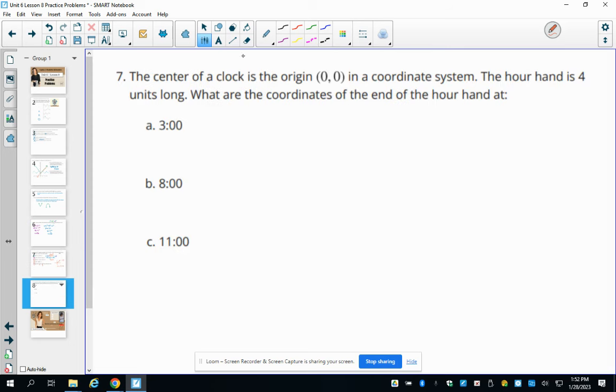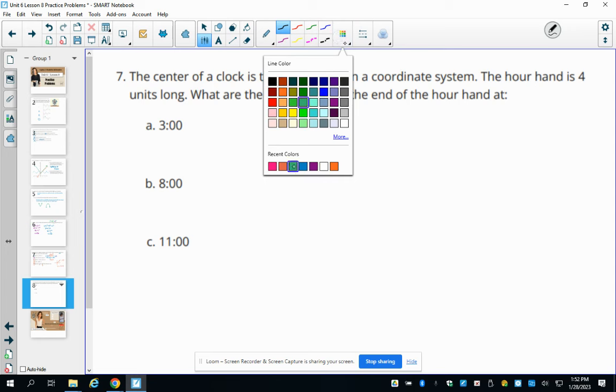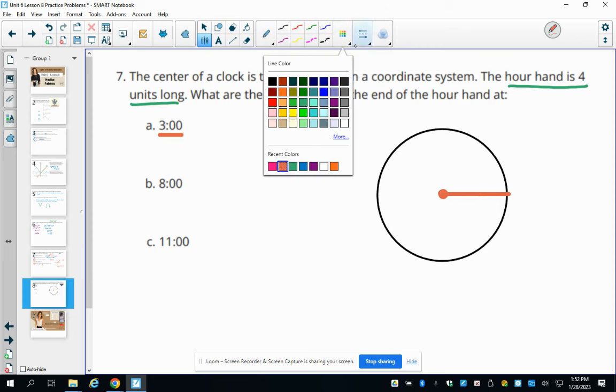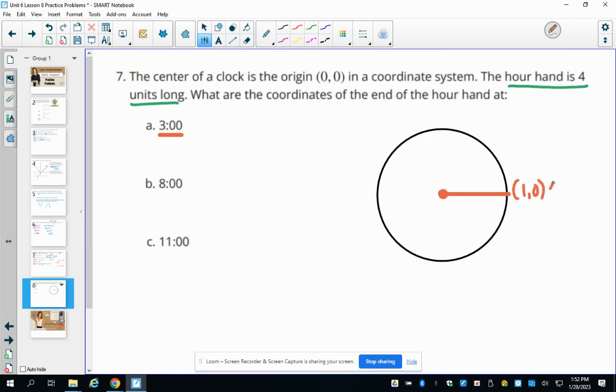Number seven, the center of a clock is at the origin 0, 0 on the coordinate system. The hour hand is four units long. So our radius here is four units long. What are the coordinates at the end of each hour hand? So let's just draw on a clock here. So 3 o'clock is this first one. So here's 3 o'clock. And if we're at 3 o'clock, that would normally on our unit circle be at the point 1, 0. So then if our radius is 4, we would just multiply it by 4. So this ordered pair is going to be the point 4, 0.